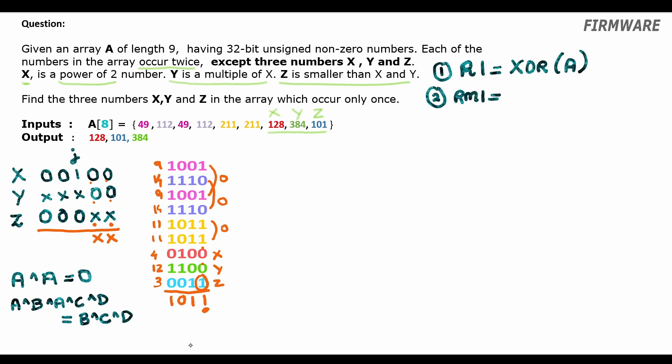So, rightmost set bit in result one equals result one AND minus result one. Now, if you don't understand this operation, please watch our episode on unsetting all bits in a number except the rightmost one whose link is in the description below. Alright, since our XOR result was 1011, therefore, the output of step two will be 0001. So, the rightmost set bit was the LSB bit.